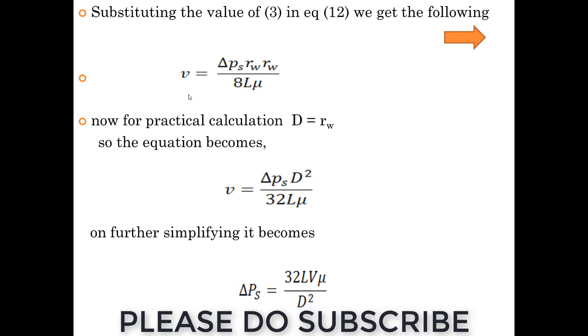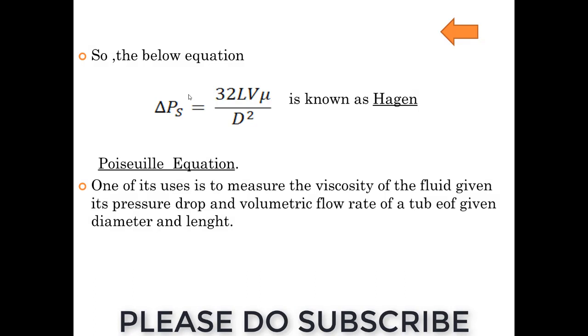We will just modify that D by 2 equals Rw. Finally, we will get V equals delta P times d squared by 32 L mu. From further simplifying, we will get delta P equals 32 LV mu by d squared.